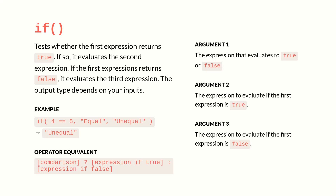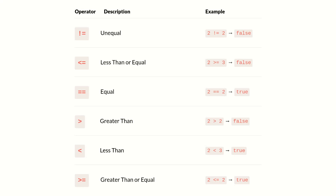That first argument is typically going to compare two values, and to compare those two values, you're typically going to use comparison operators. At the top of the cheat sheet, there's a submenu with the option of comparison operators, which you'll click and see a list of Notion's common comparison operators. You can test whether two values are equal, unequal, whether one's greater than the other, greater than or equal to, less than, or less than or equal to the other.